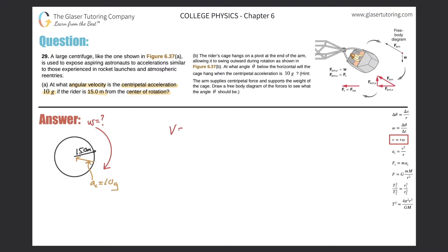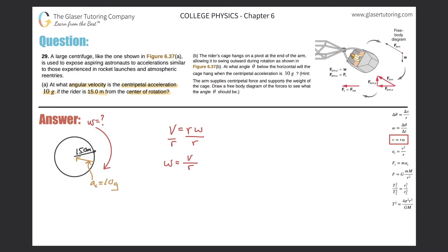We have the linear speed — the tangential velocity — equaling the radius multiplied by the angular velocity. Solve this for angular velocity. So if we can find the tangential velocity and the radius, we can find omega. But we don't know the linear velocity, so we have to think: is there any way to relate linear velocity to centripetal acceleration or anything else given in the problem? That's where the next equation comes into play.